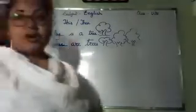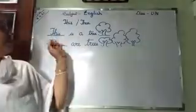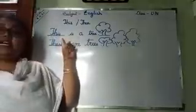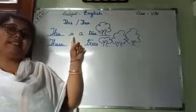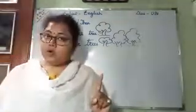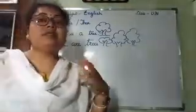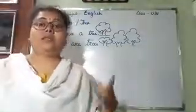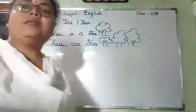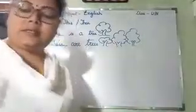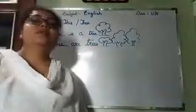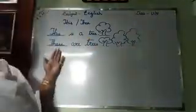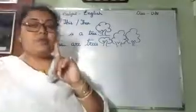Now, one more thing you have to understand. Beside 'this' we always use 'is'. You speak from your mouth: this is a ball, this is a pen, this is an eraser, this is a duster. But if more than one, we use 'these', and beside 'these' we never use 'is' — we say 'are'.